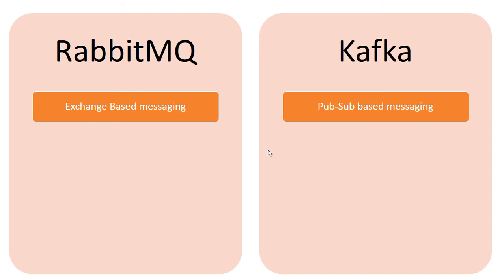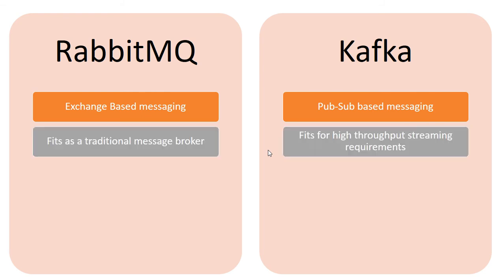So the underlying concepts for RabbitMQ and Kafka for delivery of messages — for passing messages from producer to consumer — are essentially different.